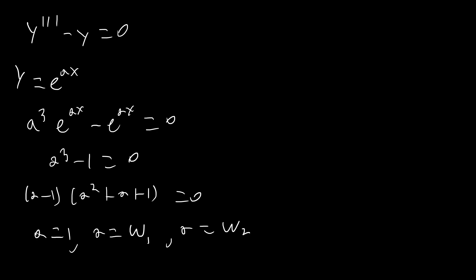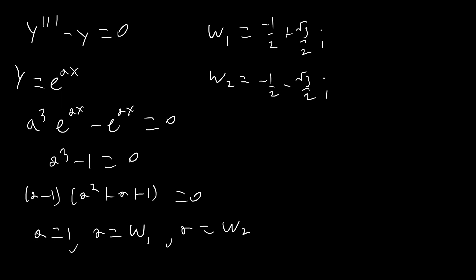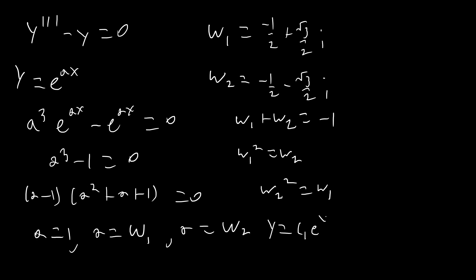Some interesting properties: omega one plus omega two equals negative 1, omega one squared equals omega two, and omega two squared equals omega one — these are properties of the complex cube roots of unity that we'll need shortly. So the general solution to the differential equation is y equals c1 e to the x plus c2 e to the omega one x plus c3 e to the omega two x. Now all we have to do is plug in our initial conditions and solve for the three constants.